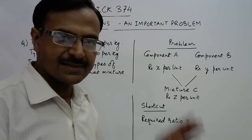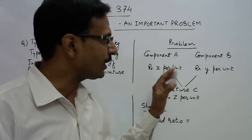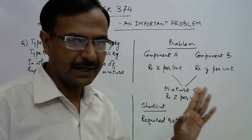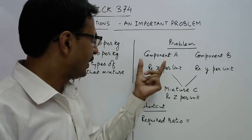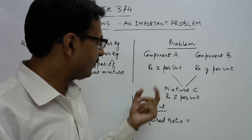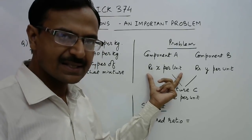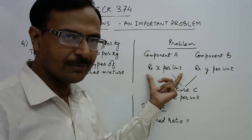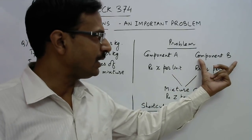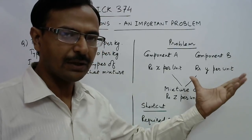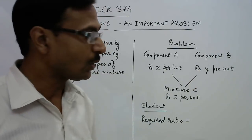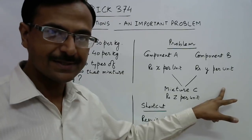The problem goes like this. There are two components A and B. Component A costs rupees x per unit and component B costs rupees y per unit. So we are given the costs of the two components.